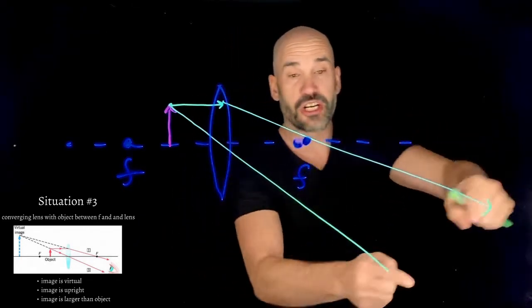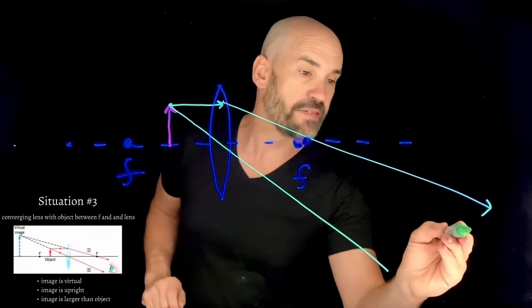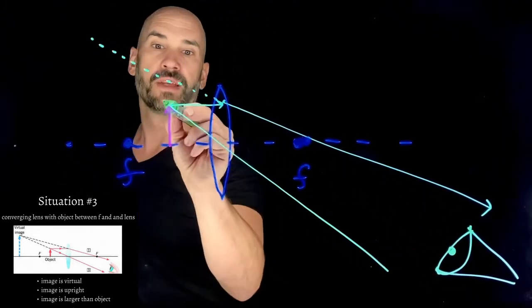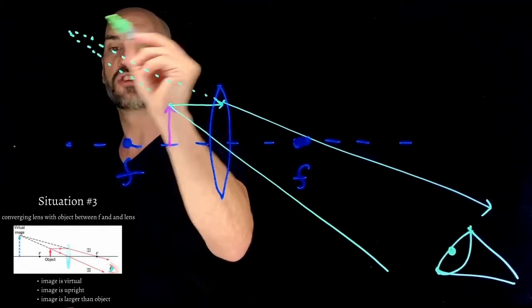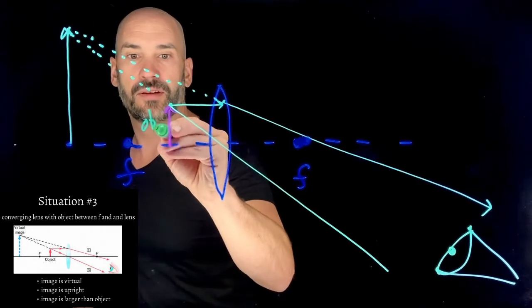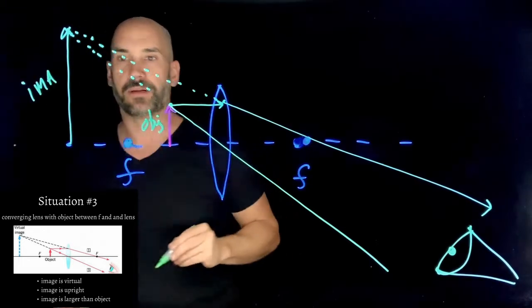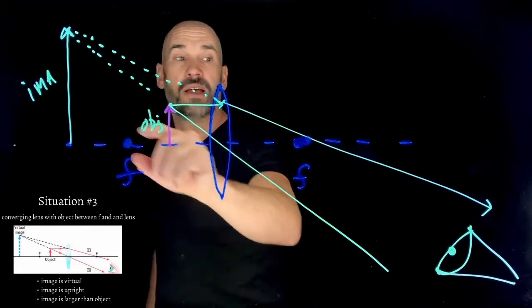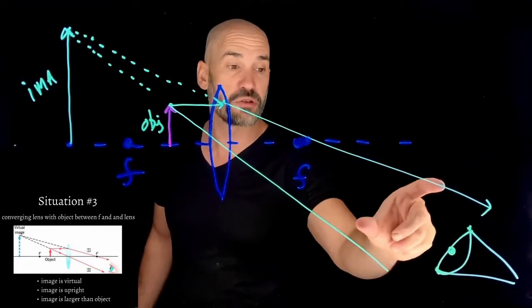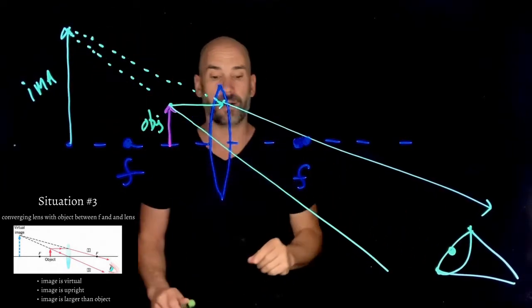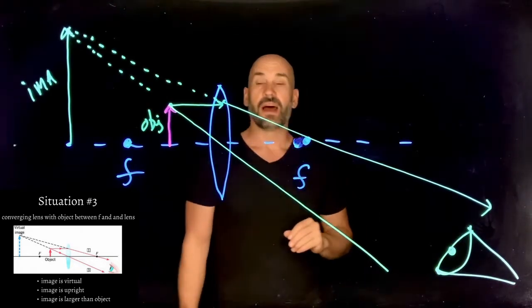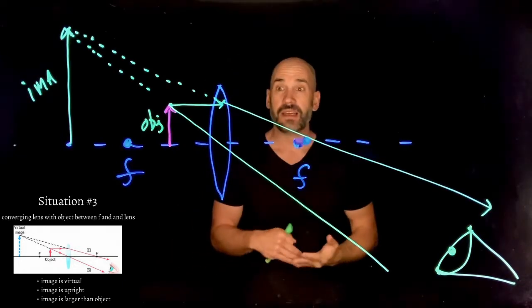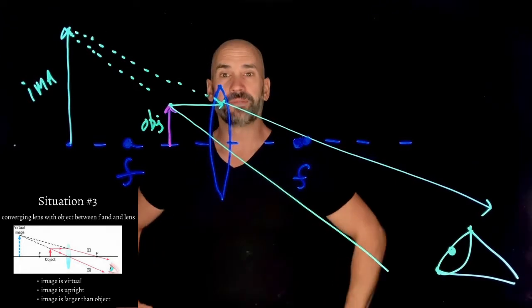The second special ray goes through the center. These rays are diverging — a real image is not going to be formed. But if an eye is over here looking at this light, it traces these rays back to what appears to be a much larger image on the same side as the object. This is a virtual image — upright and larger than the object.